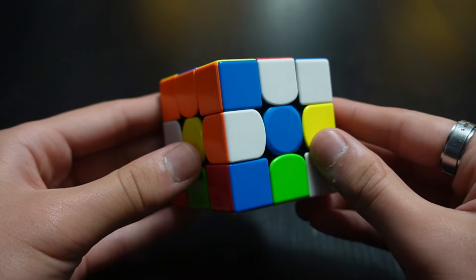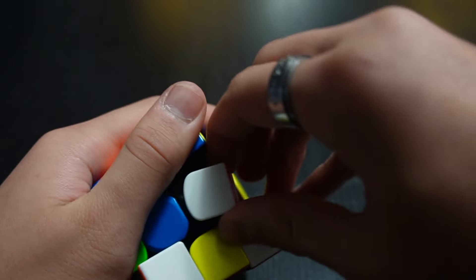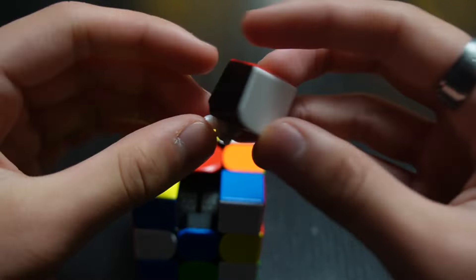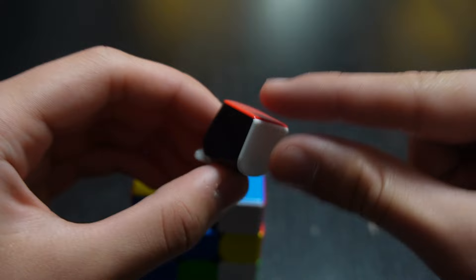Moving on, we have the types of pieces on a cube. I already explained the centers, so now we're going to explain the edges. The edge piece has two colors on it. You can use two fingers to pinch an edge piece like this.